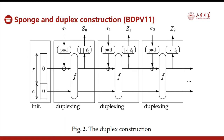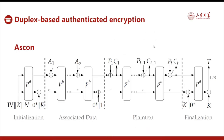Based on this structure, the designers further propose the duplex construction. Each duplex call can observe an input and produce an output, and the output could be used as a crypto key. This ensures one-path authenticated encryption designs. For example, Ascon, one of the CAESAR final winners, is duplex-based.